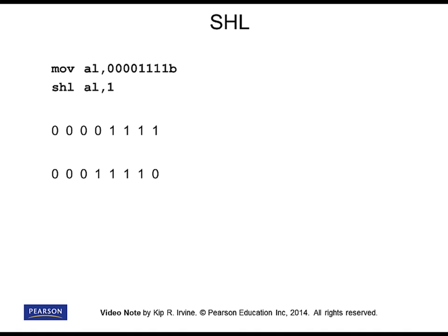Let's start with the shift left instruction. When you shift binary bits to the left, you can shift one bit at a time, or you can shift multiple bits. I'll start with just shifting one bit. You can see that in the two instructions at the top, what we're doing is setting up the AL register with a pattern of eight binary bits, and then we're going to shift all of those bits one position to the left. In the diagram, it's easy to see how each binary bit moves one position to the left, and the lowest position is filled with a binary zero.